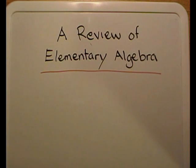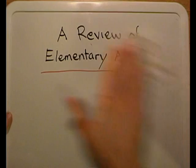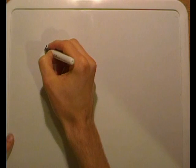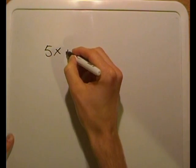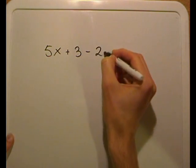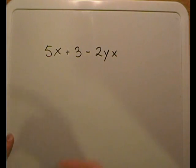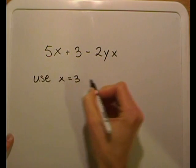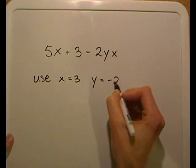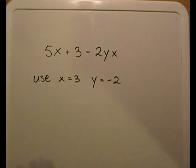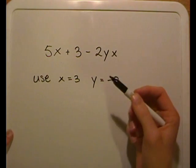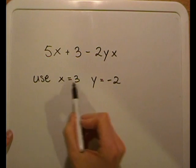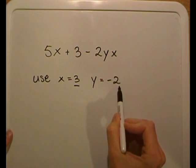The first section is called Evaluating an Algebraic Expression. Let's say you're given an expression that looks something like this: 5x plus 3 minus 2yx. And you're supposed to use x equals 3 and y equals negative 2. The only thing you do is plug in — wherever it says x, you plug in a 3; wherever it says y, you plug in a negative 2.